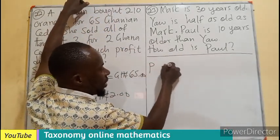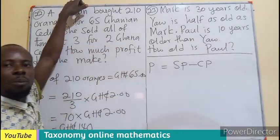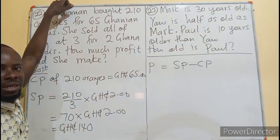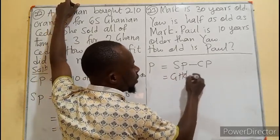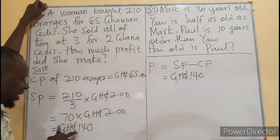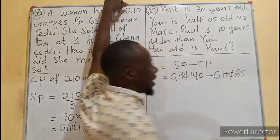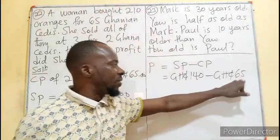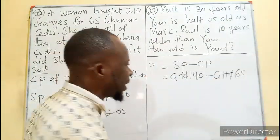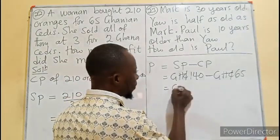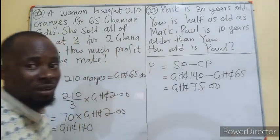To find the profit: profit equals selling price minus cost price. How much money did the woman make on top? That is 140 minus 65 Ghana cedis. Since 140 minus 70 would have been 70, and 70 is five more than 65, we get 75 Ghana cedis as the profit.